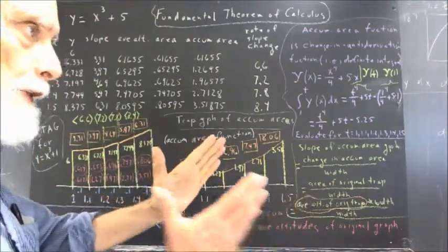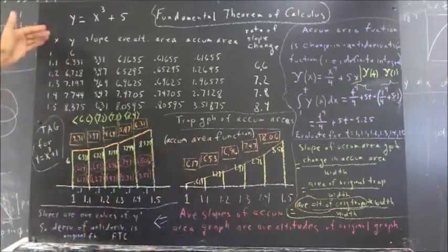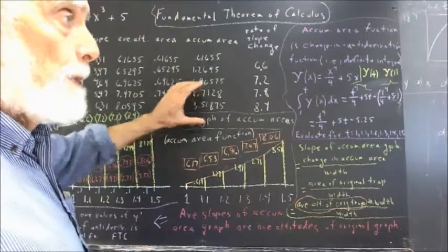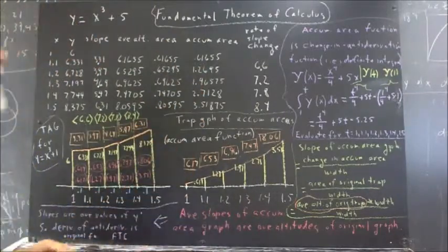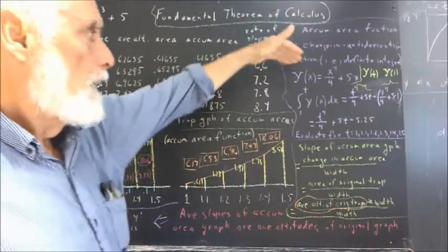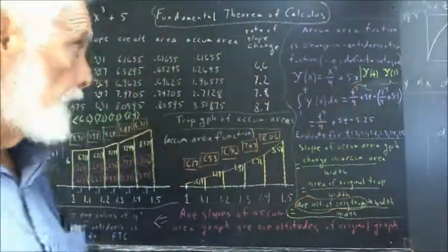As the interval shrinks to zero, the increment shrinks to zero, the matching approaches perfection.